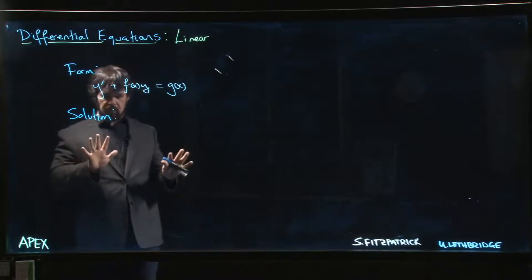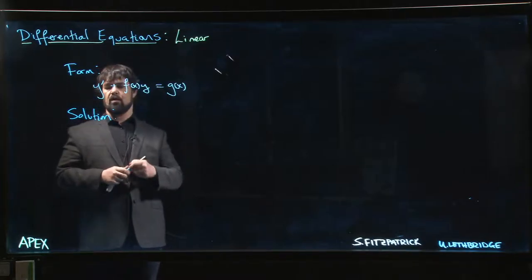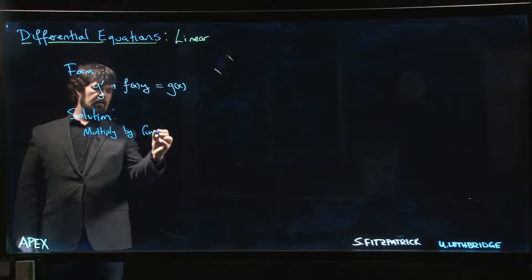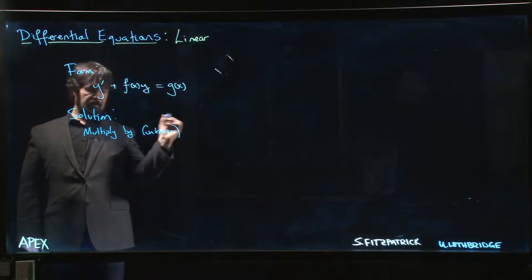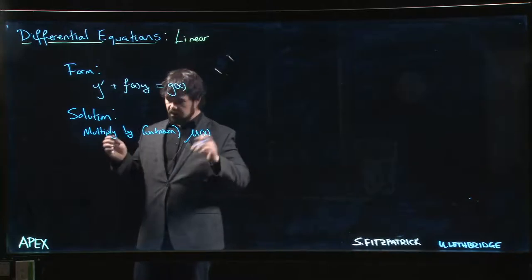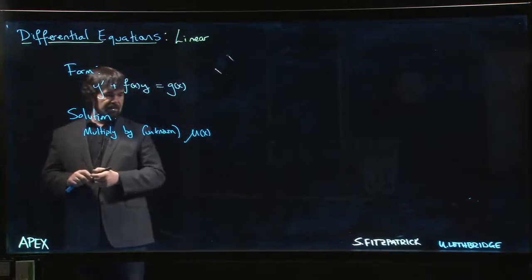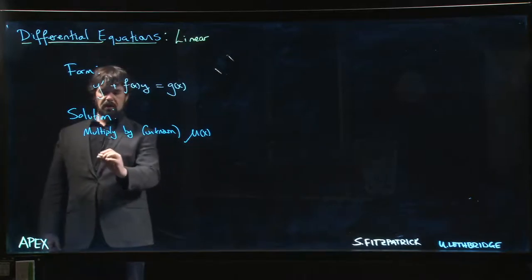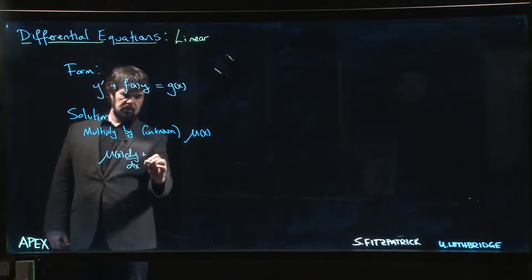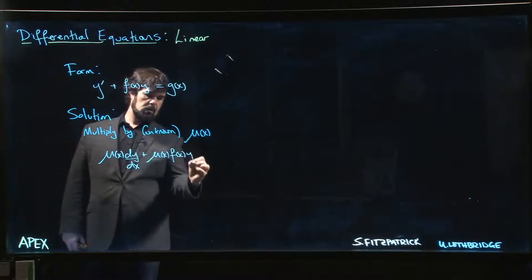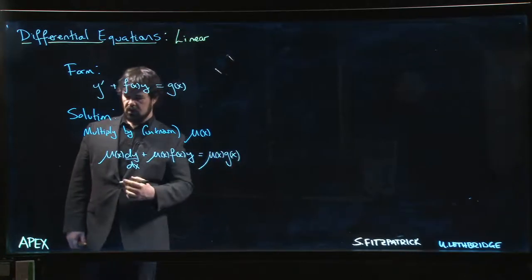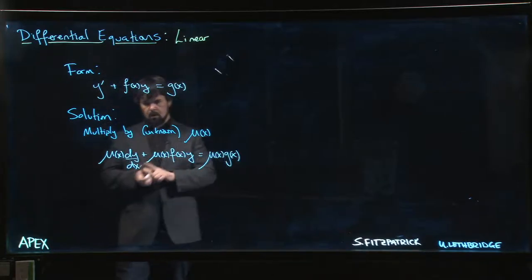But this doesn't quite work, it doesn't look right. So what you do is you multiply by, and this is going to be some unknown function so far, so we call it mu of x. I don't know why mu is the default here, so it's a Greek letter mu. And so we multiply both sides by mu of x. We get mu of x dy/dx plus mu of x f of x y equals mu of x g of x.